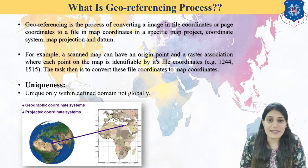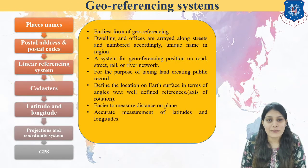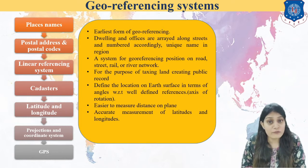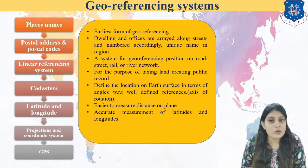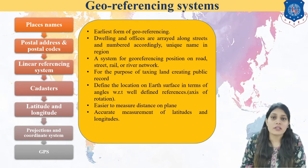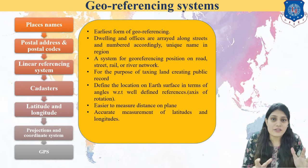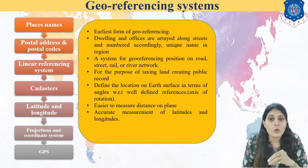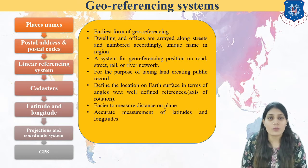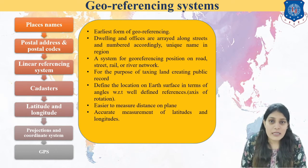Here is a geo-referencing system. When we give an address to anyone's residence or workplace, we have a place name, postal codes, landmarks, cadastral street names, and plot numbers. These are unique things that allow us to locate one place and address. That is a geo-referencing system — it shows how and why we provide geo-references.